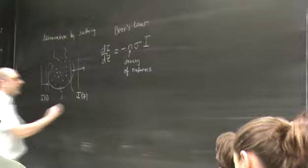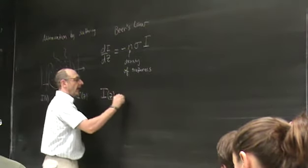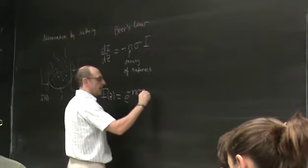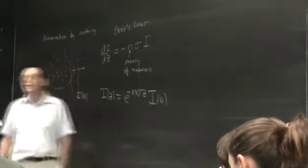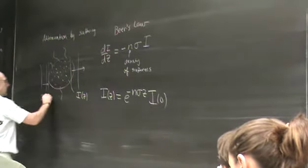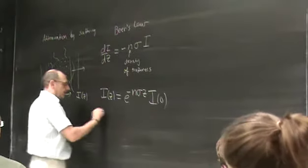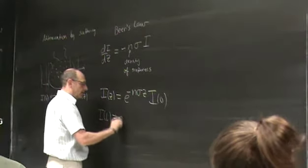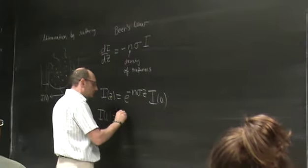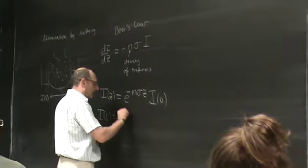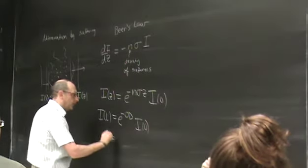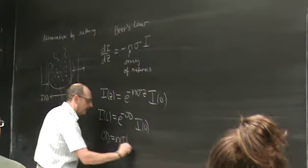Scattering leads to an exponential decay of intensity. If the total length of the sample is L, then the output intensity equals e to the minus OD, where the optical density OD equals n times sigma times L.